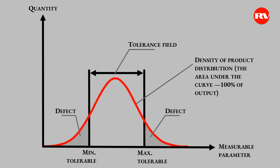Now let's turn to some modification of this scheme. In general everything is the same here — the tolerance field — but the density of the distribution of the manufactured products is imposed on the tolerance field. The area under the curve of distribution density is 100% of our production. All that falls into the tolerance field — these are conditioned products. Everything that is not included in the tolerance field is defect. The defect in this scheme is shaded with a square shading.